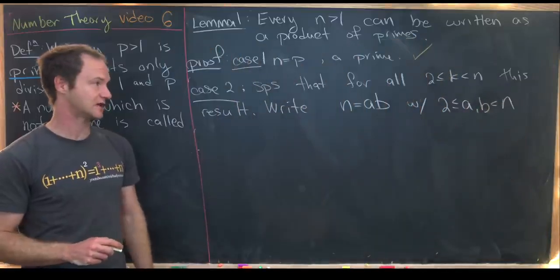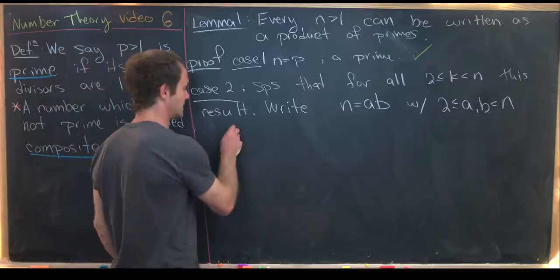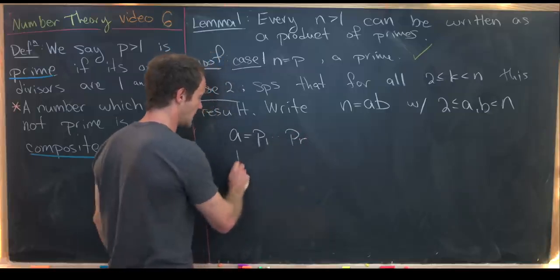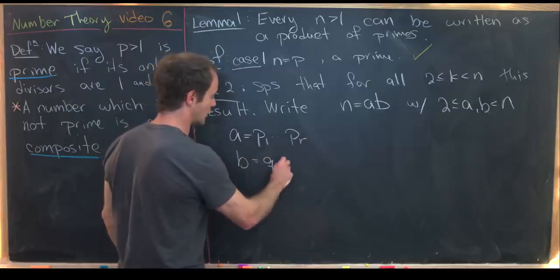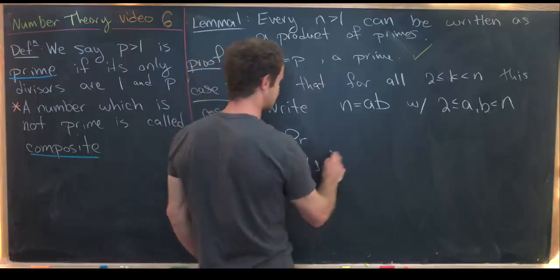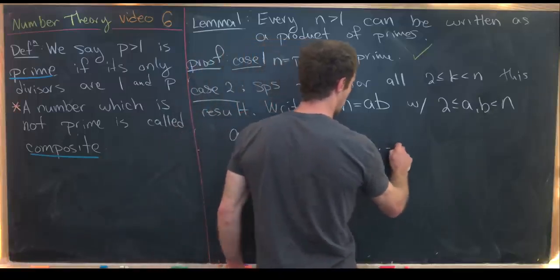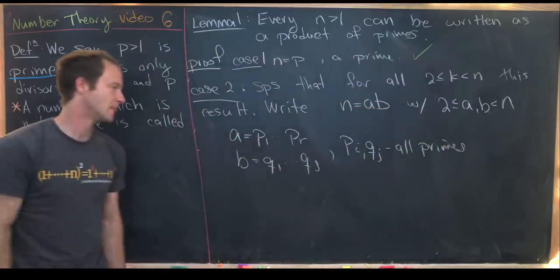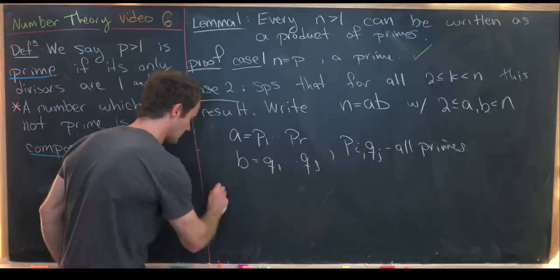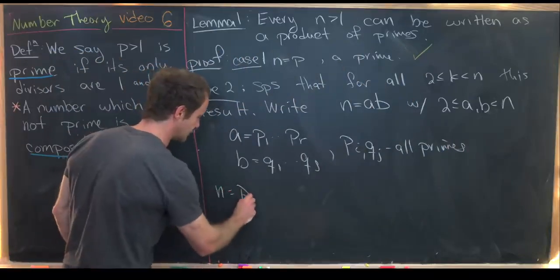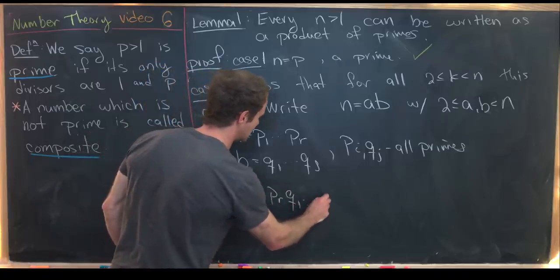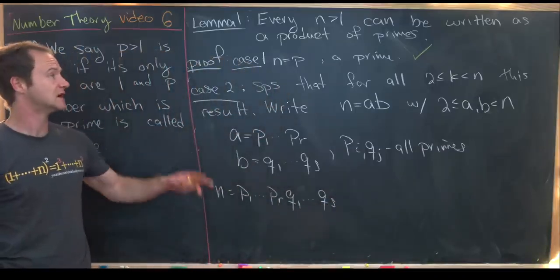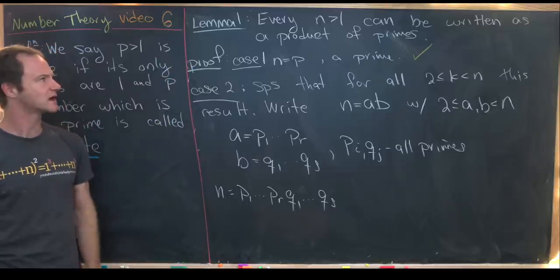That means we can apply the induction hypothesis to a and b. So we can write a as p₁ up to pᵣ and b as q₁ up to qₛ, where all pᵢ and qⱼ are primes. Putting this together, n equals p₁ up to pᵣ times q₁ up to qₛ — a product of primes. That finishes the proof of Lemma 1.